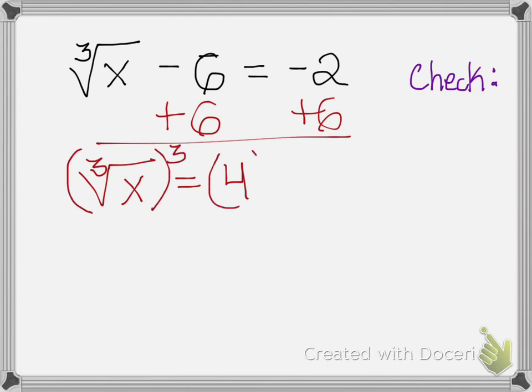It's going to cancel out the cube root. I'll bring down my x. 4 to the power of 3 equals 64.